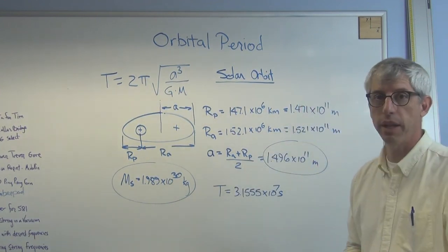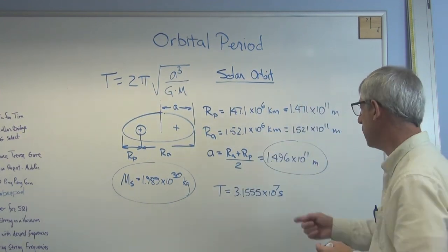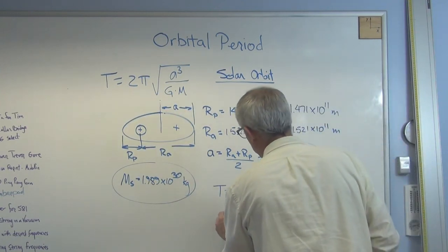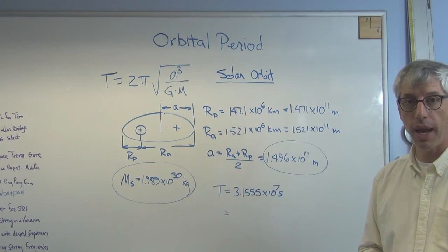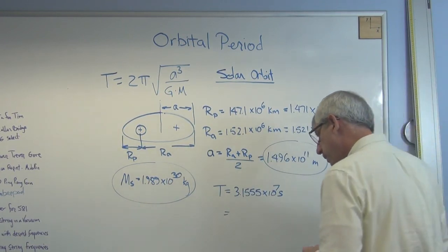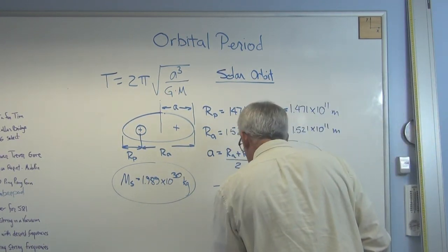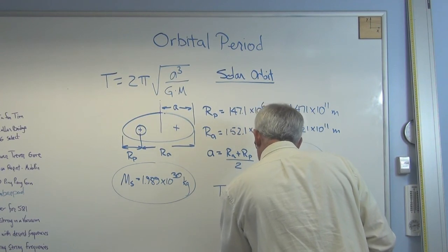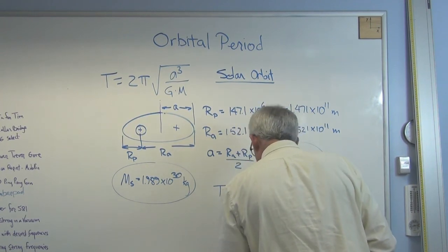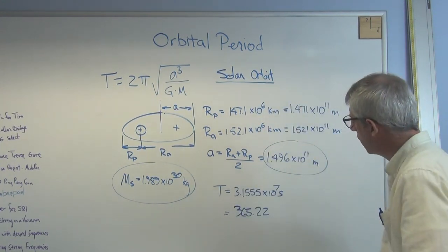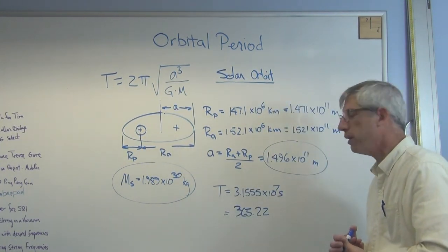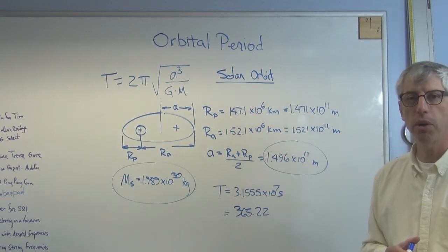And again, seconds, that's the fundamental unit here, so it is going to come out in seconds. Well, I don't want it in seconds. I know it's 365.25 days. So if you work it out in days, it comes out to 365.22 days. So we got it right to within about three parts in 36,000. I'm okay with that.